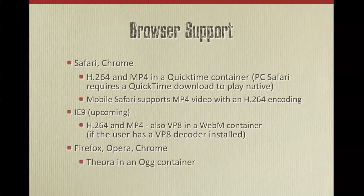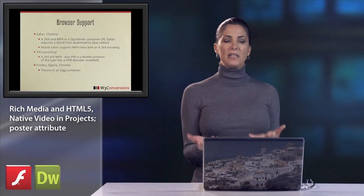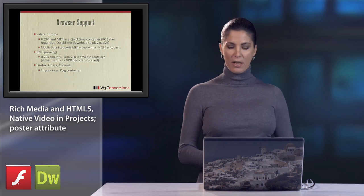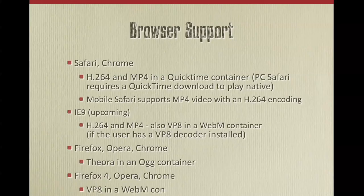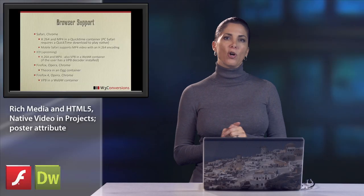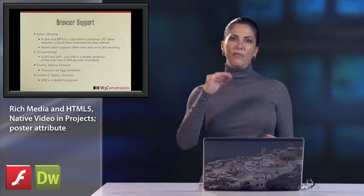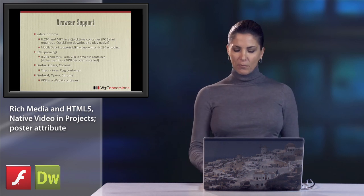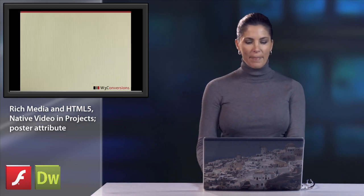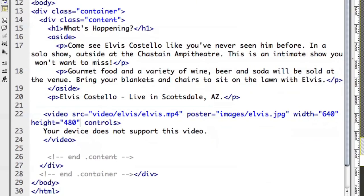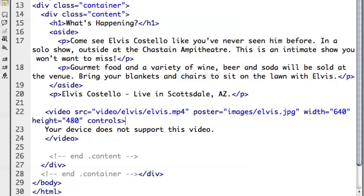Firefox, Opera, and Chrome support Theora in an Ogg container. Firefox and Opera will never go to H.264 — they can't afford to. Chrome said they'll support H.264 and Ogg as well. Firefox 4, which is in beta, Opera, and Chrome are also supporting WebM with VP8. Chrome jumped on that too since both are owned by Google. So if you want to see something in Chrome, you can encode it any way and it will play. But for the rest, we've got to come up with a variety of strategies.